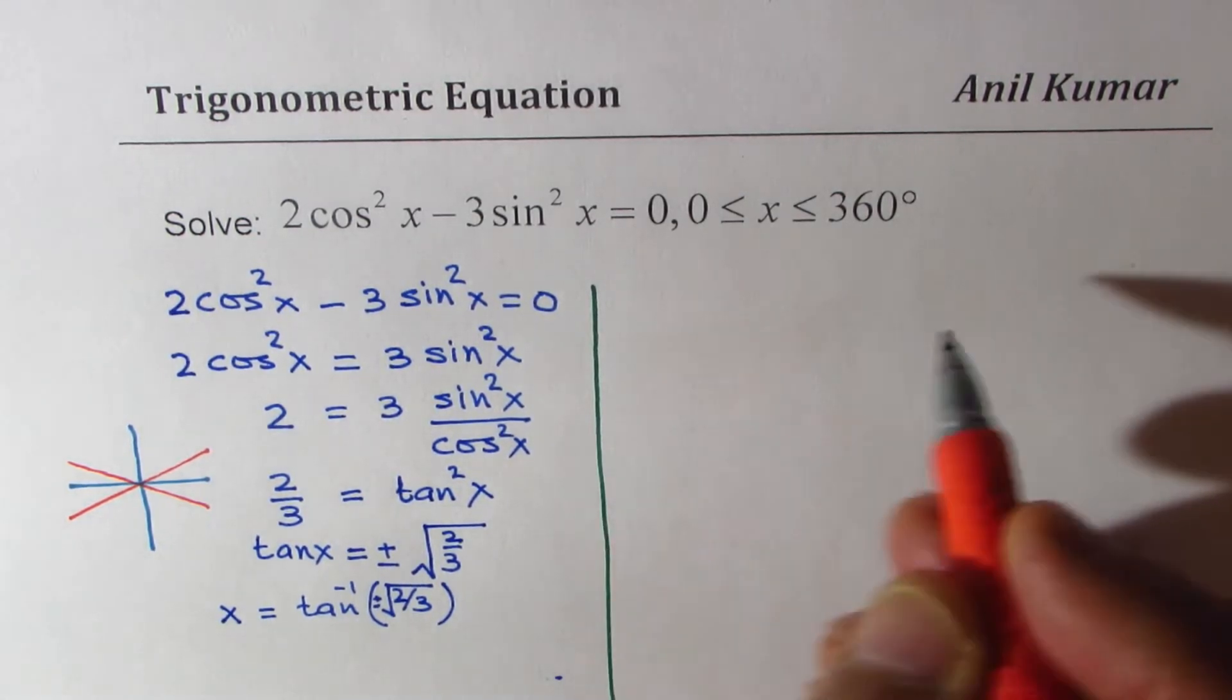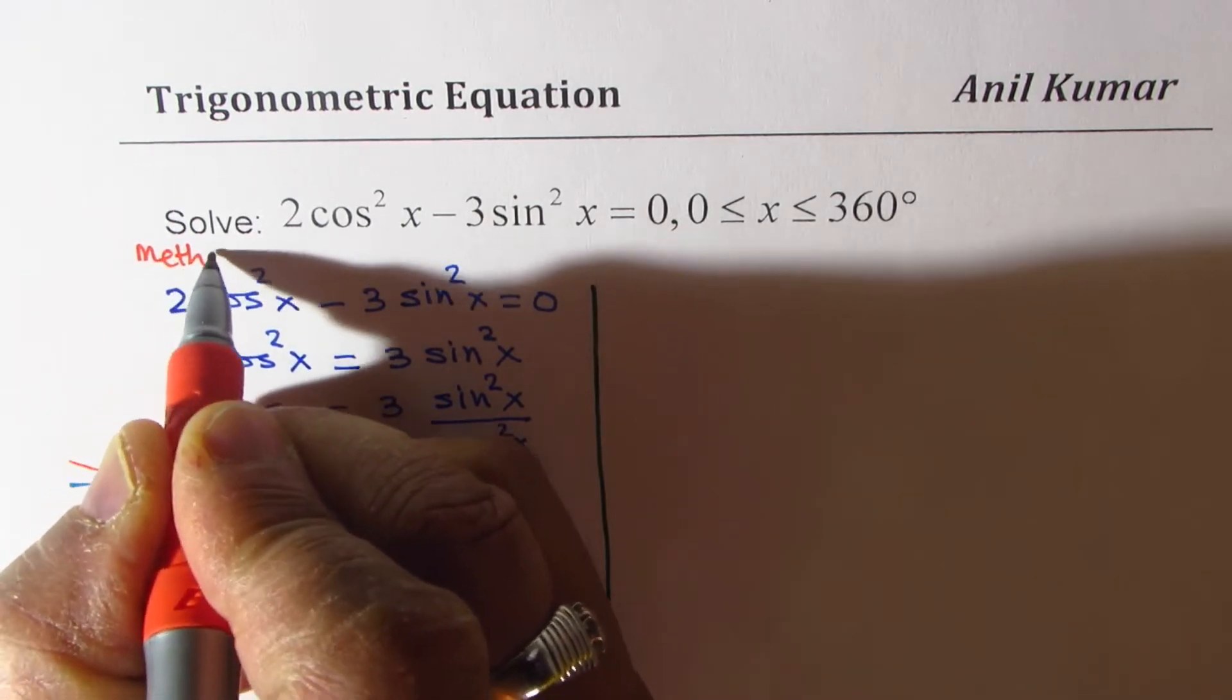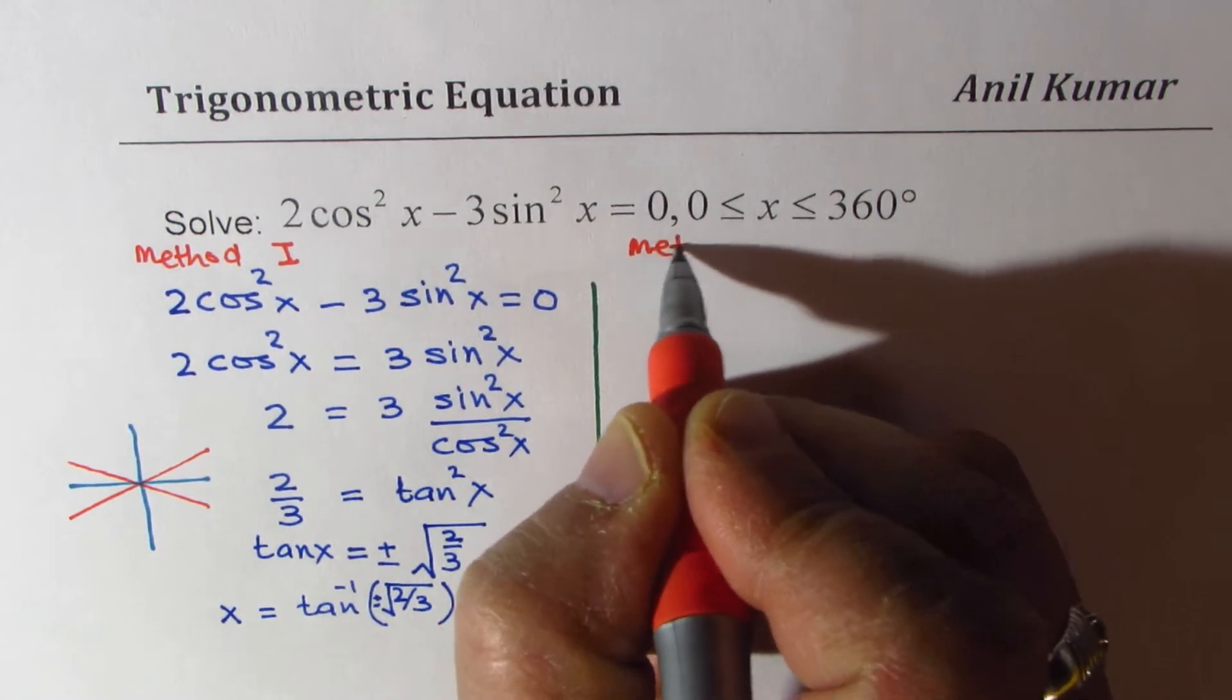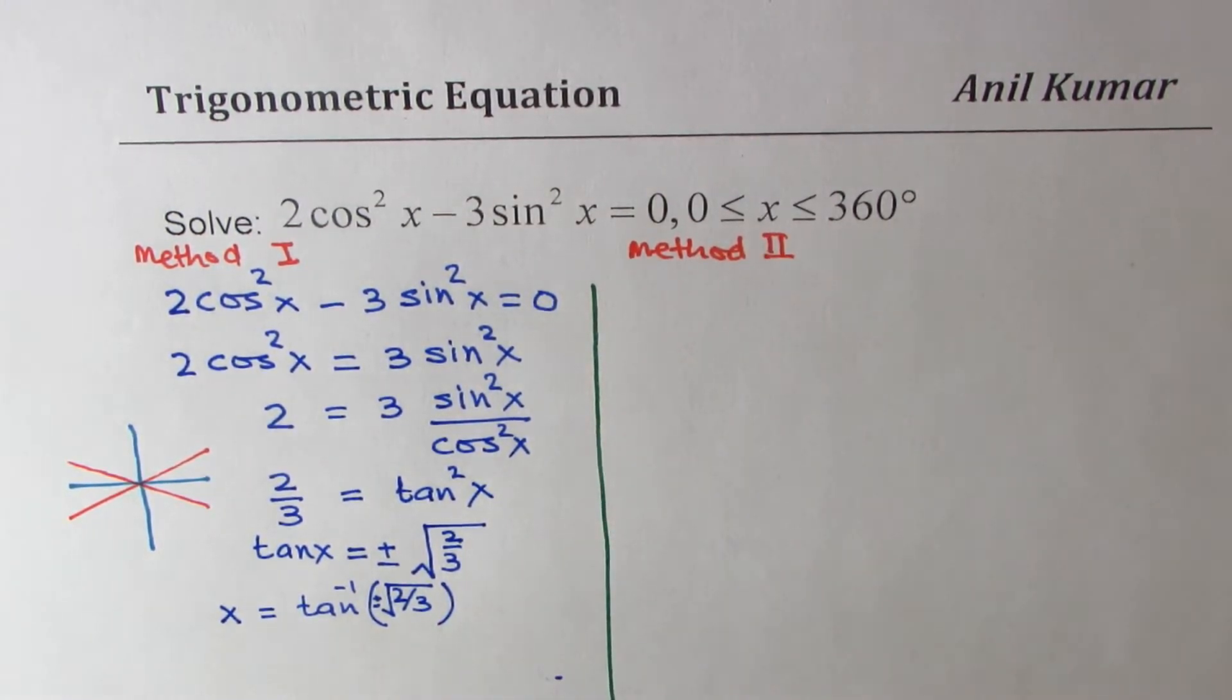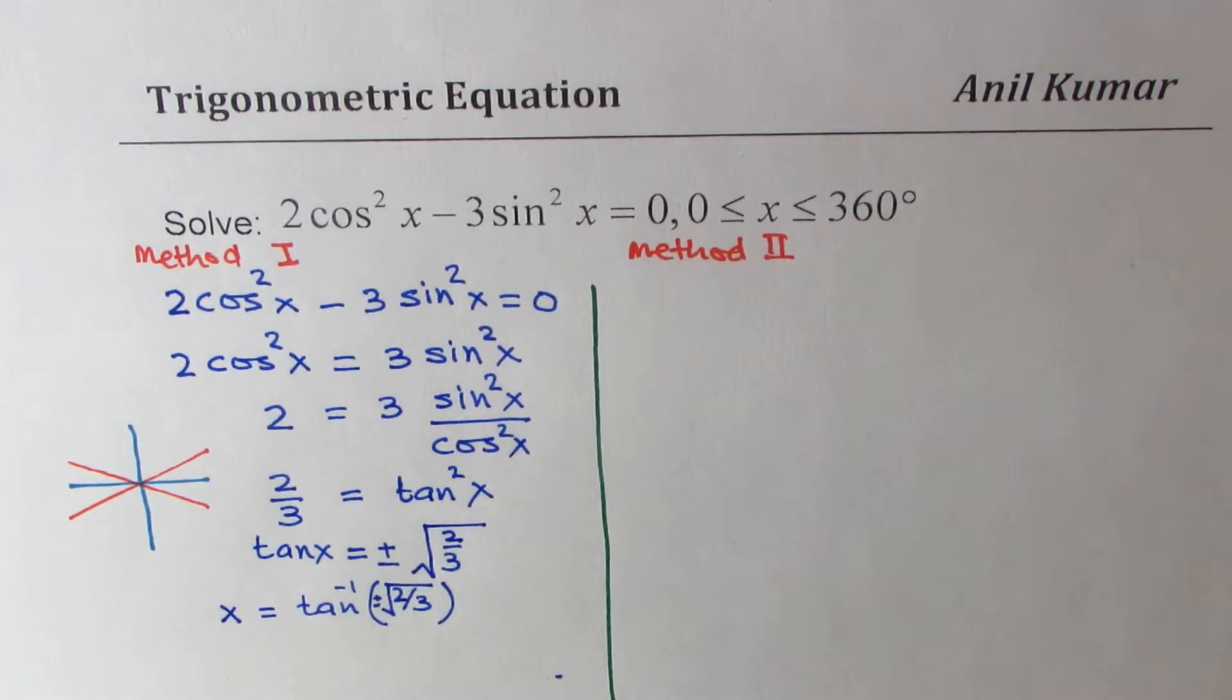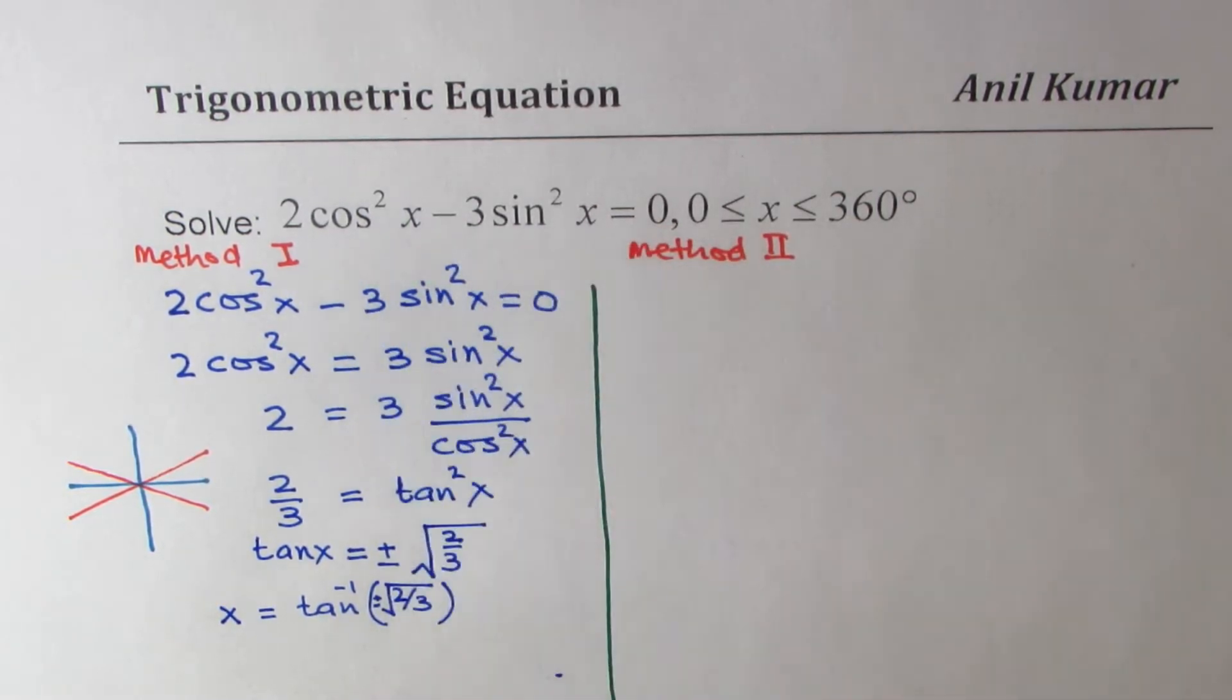Now let's look into second method. So let me take this as method 1. Now let's say method 2. You could also write cos²x as sin²x, or you could write sin²x as cos²x.